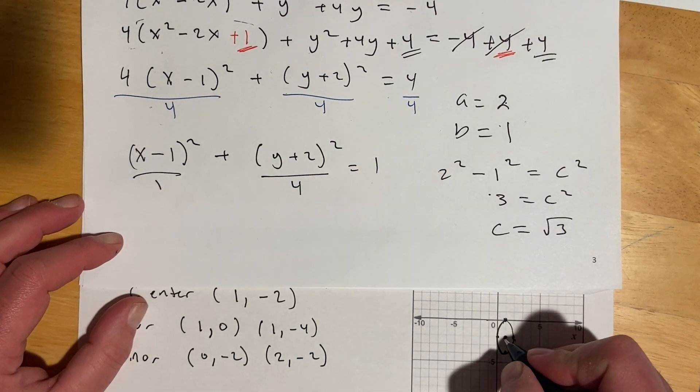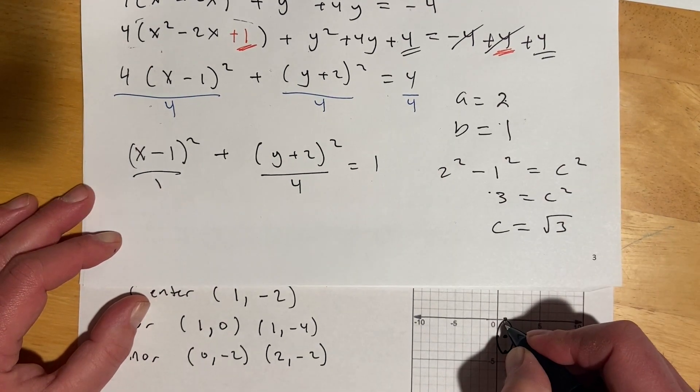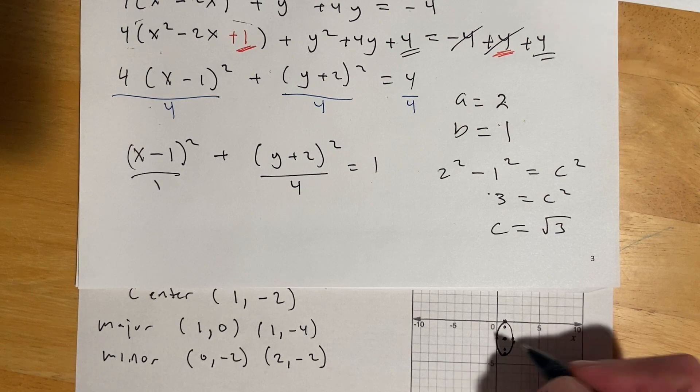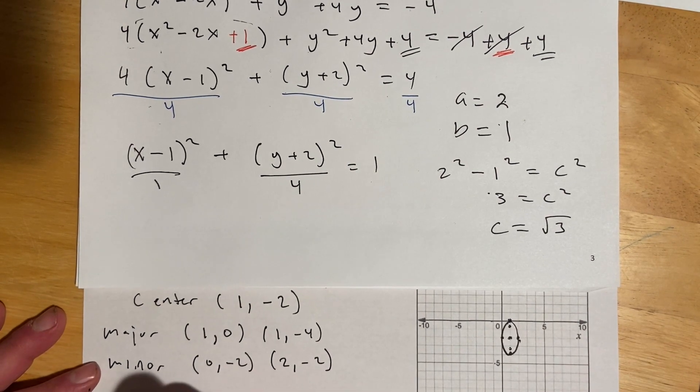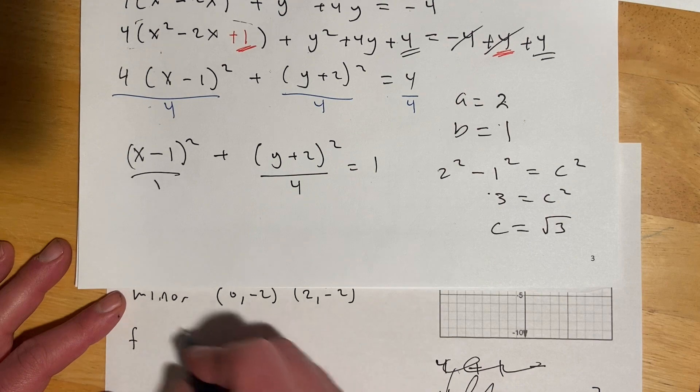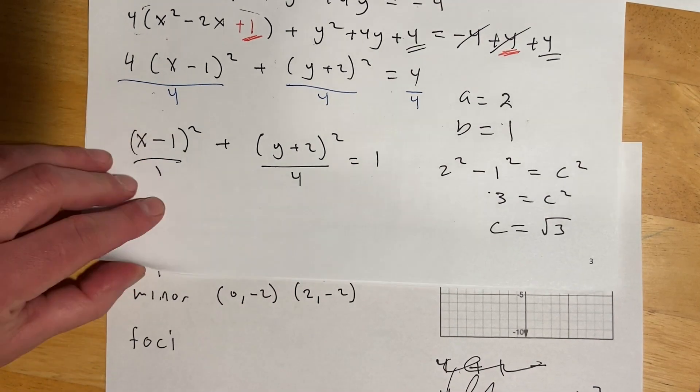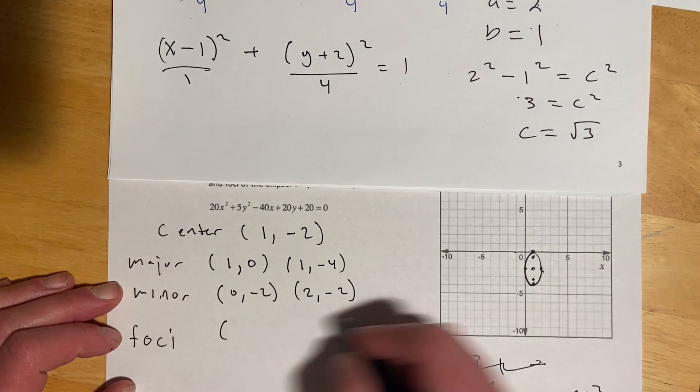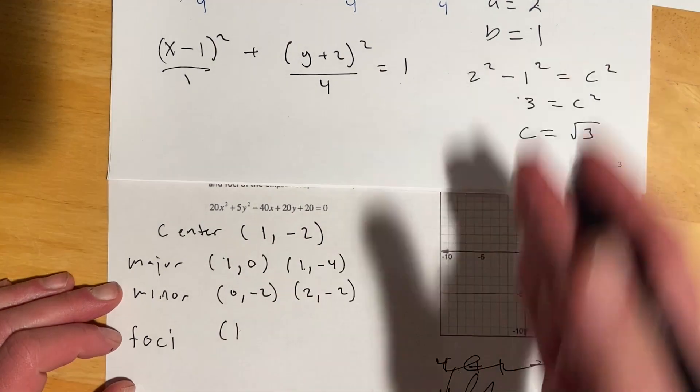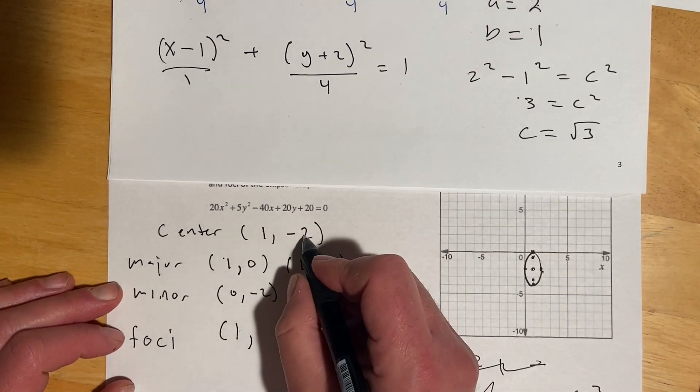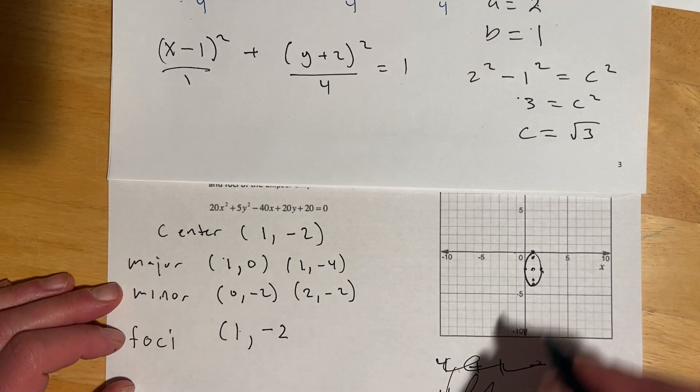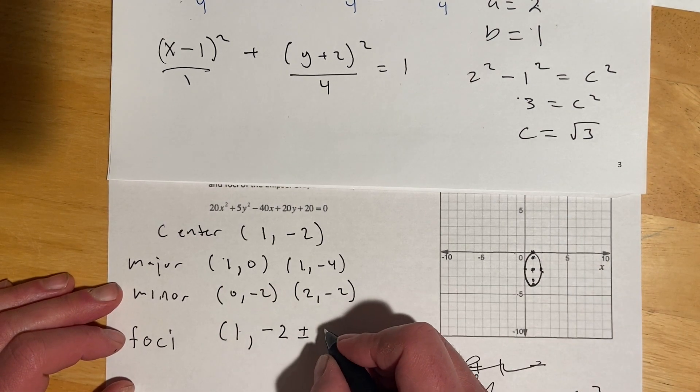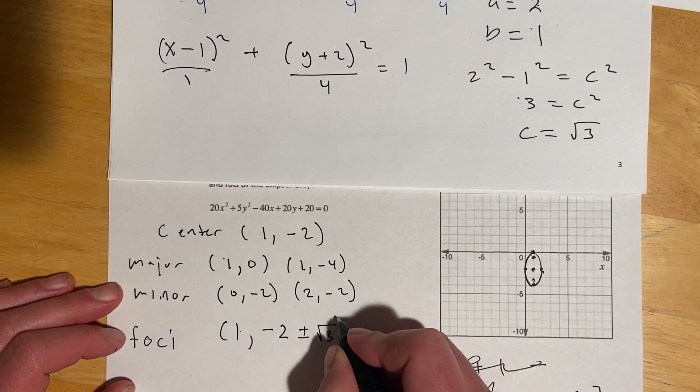So, now, our foci is going to run up and down. So, root 3 is about 1.7. So, we put it about there and there. And, again, I'm not trying to be terribly accurate. I'm just doing that as sort of a visual cue to help me get everything in the right spot. So, we'll come here and go. The foci are going to be, x-coordinate for both of those is 1. And that's all these 1s that we see this time running this way. And so, they're coming off of the center. So, that's going to be negative 2. We're going up root 3. And we're going from there also down root 3.